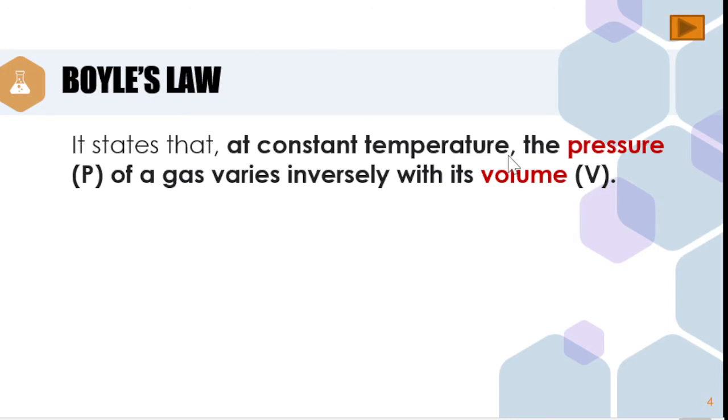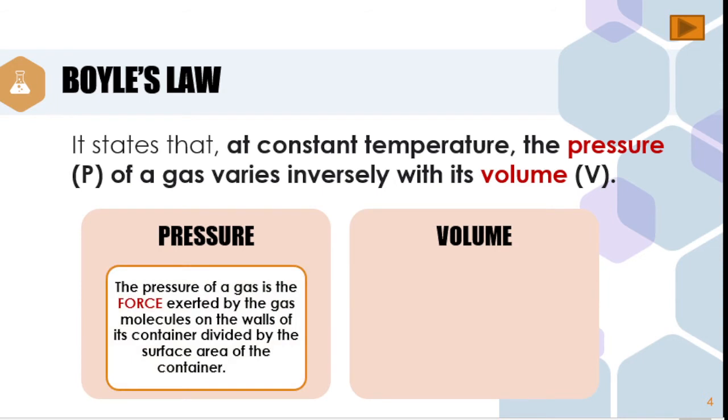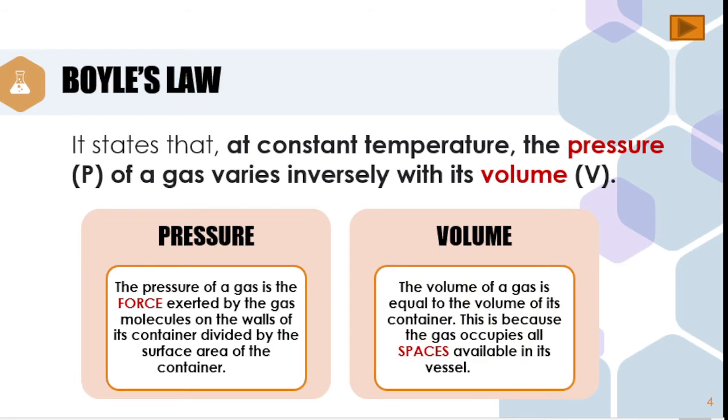In this definition, there are two variables that are mentioned. We have pressure and volume. Let us differentiate the two. When we speak of the pressure, it is the force exerted by the gas molecules on the walls of its container, divided by the surface area of the container. On the other hand, when we talk about volume, the volume of a gas is equal to the volume of its container. This is because the gas occupies all the spaces available in its vessel.